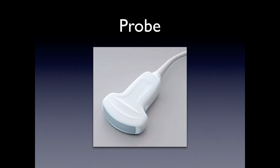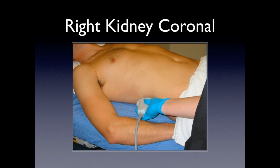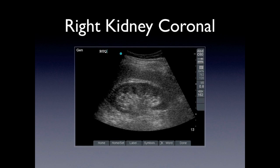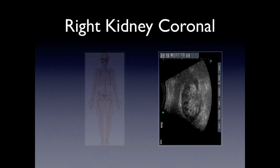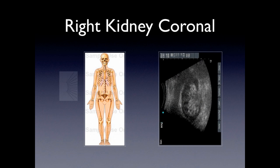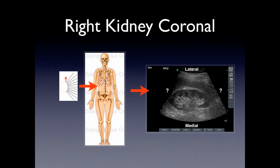We're going to be using the curvilinear probe at the mid-axillary line, with our indicator pointing towards the patient's head. Regarding orientation, your probe is on the top part of the screen in your near field. So if we orient the patient towards the image, you might understand a little better — don't worry about it too much if not.